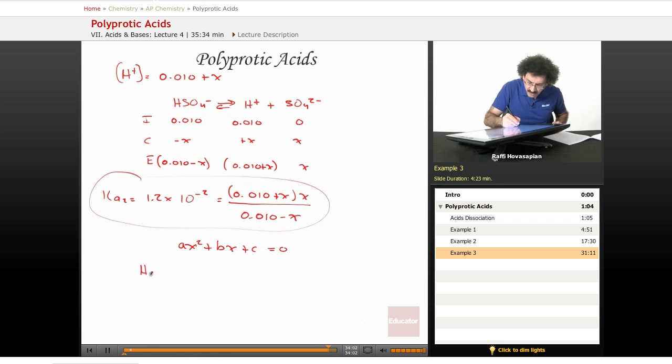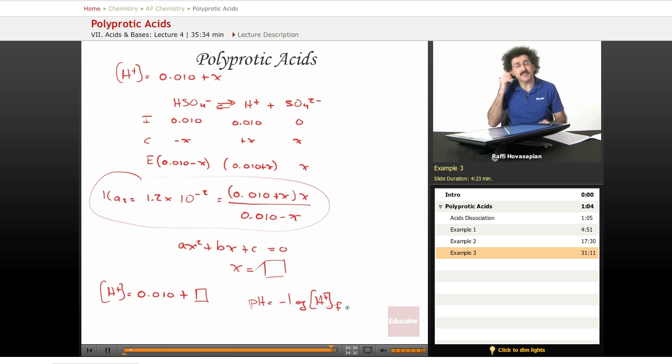When you solve for X, your final hydrogen ion concentration equals 0.010 plus X. Your pH equals the negative log of the final hydrogen ion concentration.